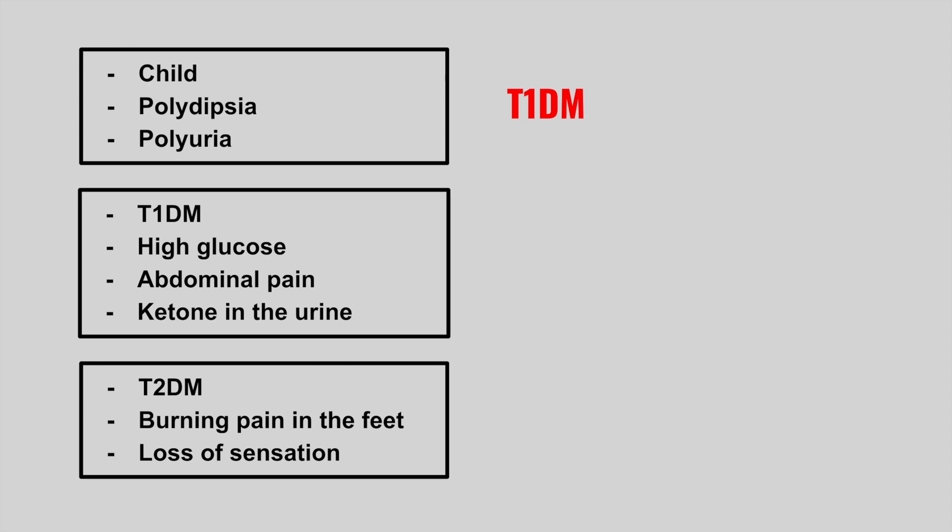The next patient has type 1 diabetes, high glucose levels, abdominal pain, and ketones in the urine. This is diabetic ketoacidosis, which is a complication of type 1 diabetes.